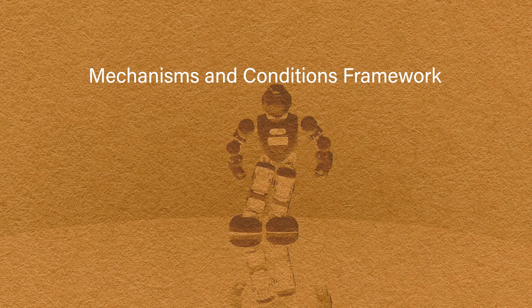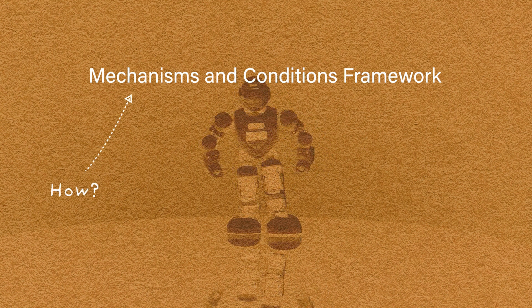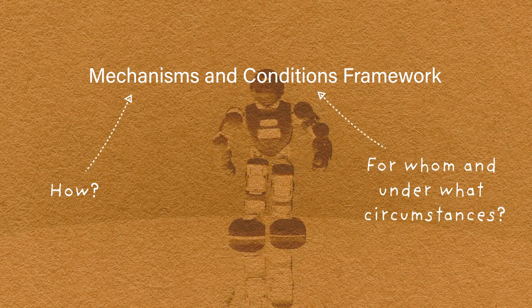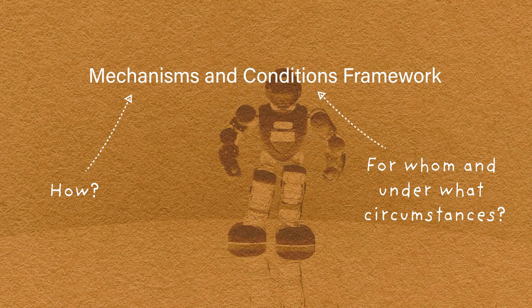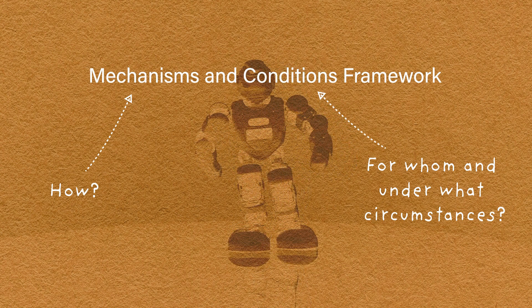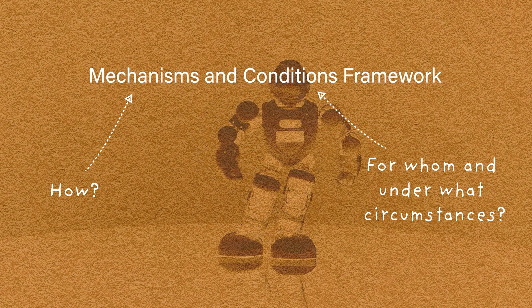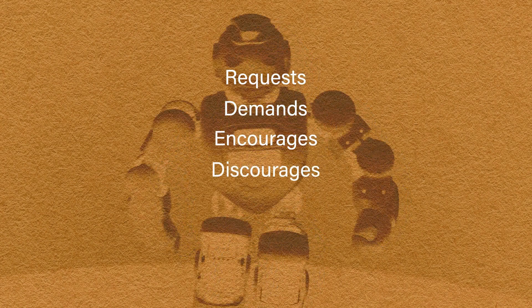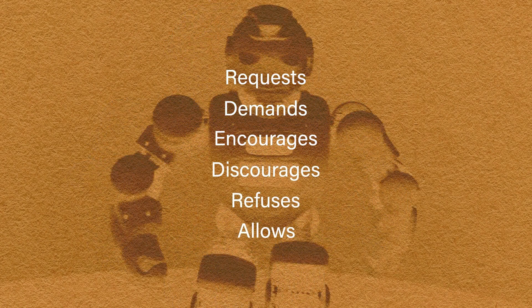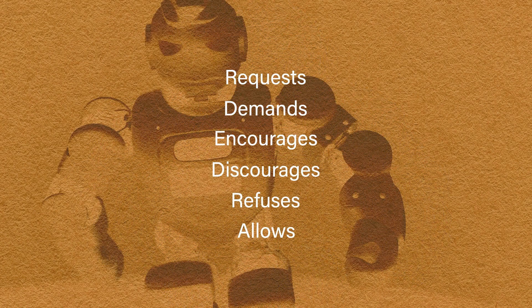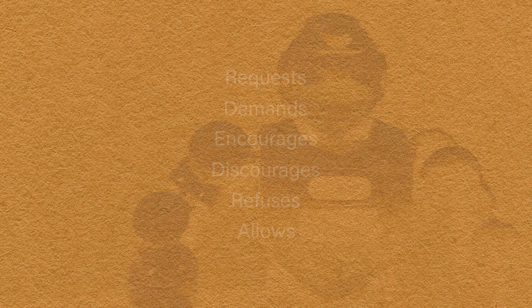The Mechanisms and Conditions Framework has two parts: the Mechanisms, which is the how, and the Conditions, which is the for whom and under what circumstances. The Mechanisms of Affordance indicate that a technology enables and constrains with varying degrees of insistence. It doesn't just afford or not, but requests, demands, encourages, discourages, refuses, and allows social action.